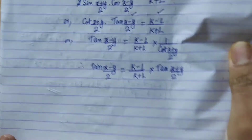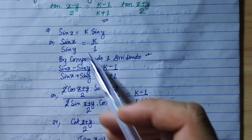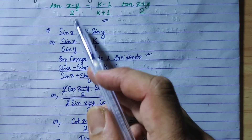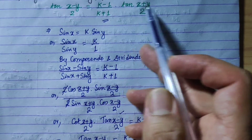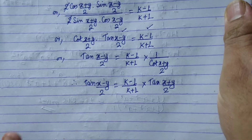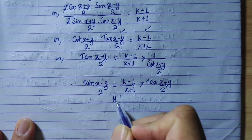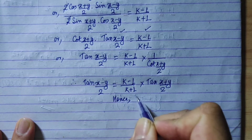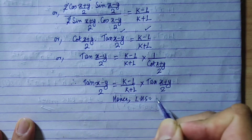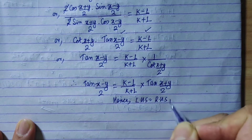Finally, we will see tan of (x minus y) by 2 is equal to (k minus 1) by (k plus 1) into tan of (x plus y) by 2. Then we will finally simplify and prove. Hence, as conclusion, LHS equals RHS. Proved.